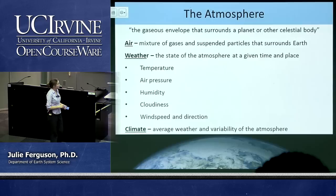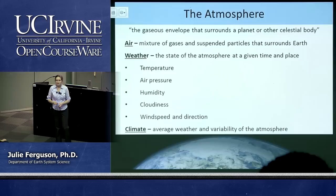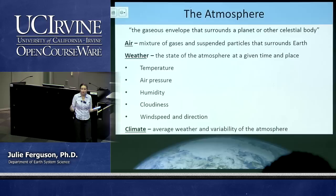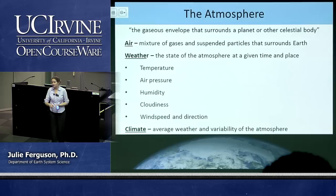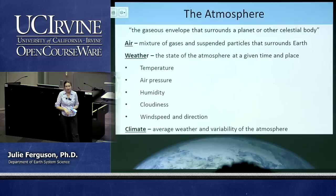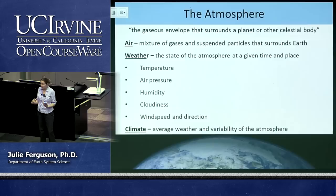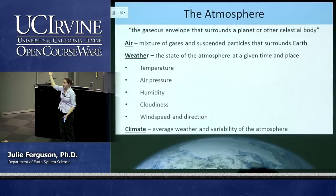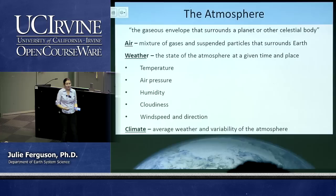If we're going to talk about weather, what is weather? It's really the state of the atmosphere in any one particular place at any one particular time. The things we use to characterize weather are: temperature (how hot it is), air pressure (whether we're under high or low pressure), humidity, cloudiness, and wind speed and direction. Those are the five things that really characterize weather, and we'll look at each of these in the next couple of weeks.